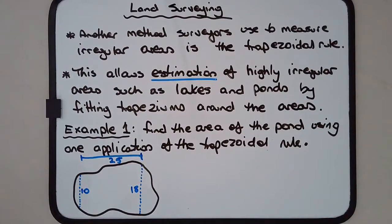Another method that surveyors use to measure irregular areas is what we call the trapezoidal rule. I'm not going to write the rule directly or explicitly at this point, but rather, let's look at it for what it is instead of confusing you.